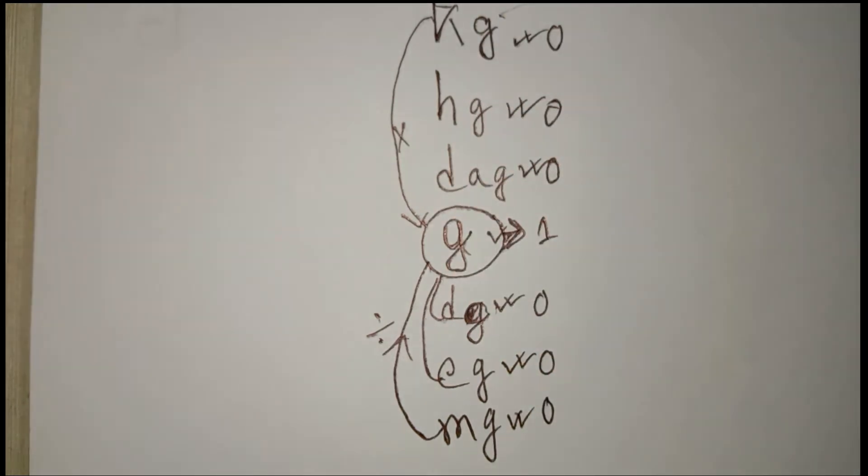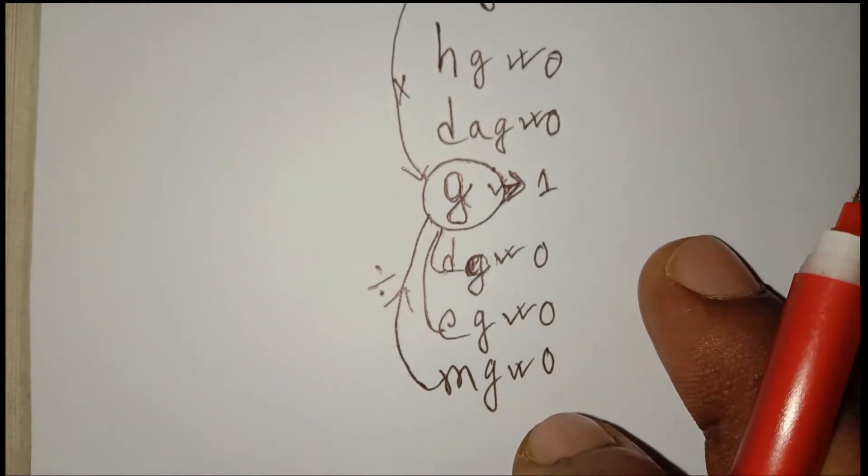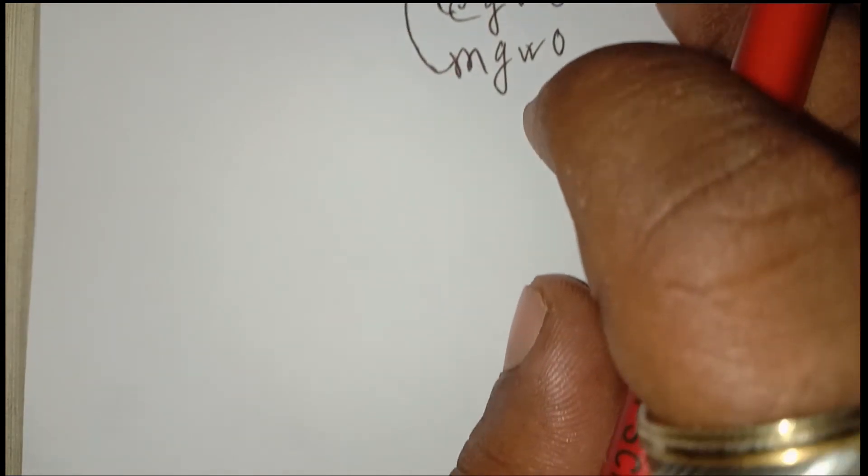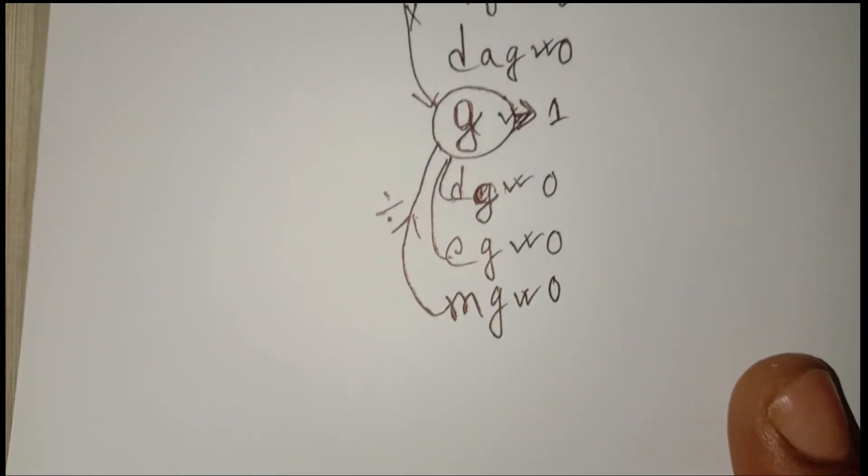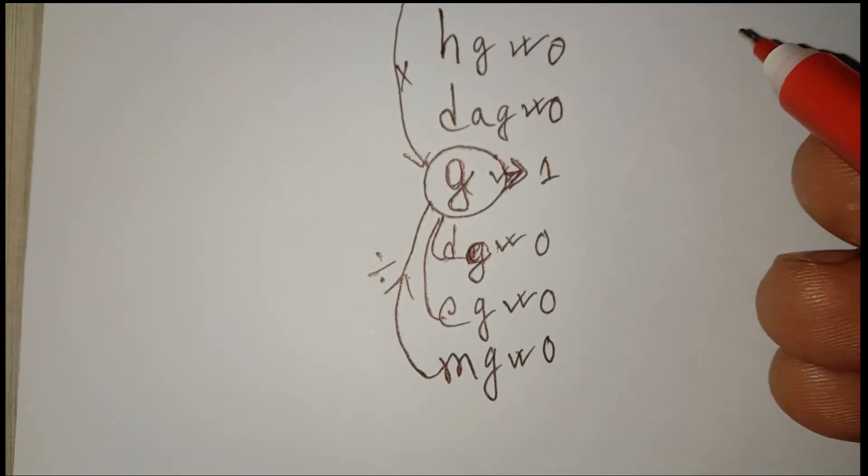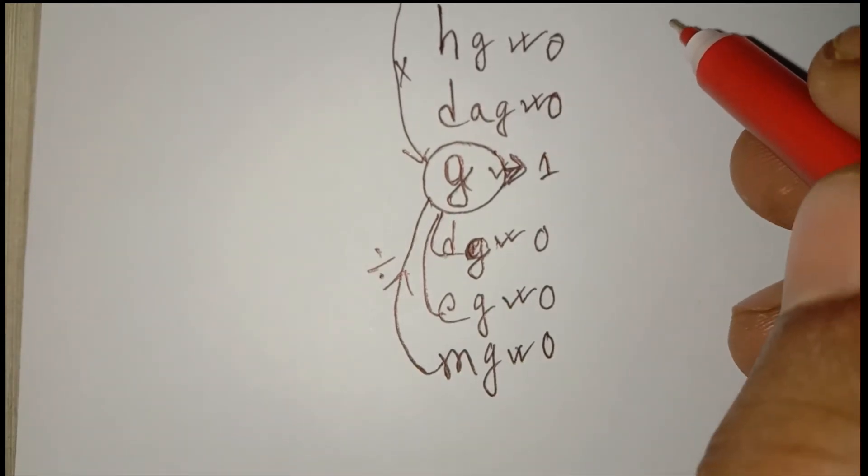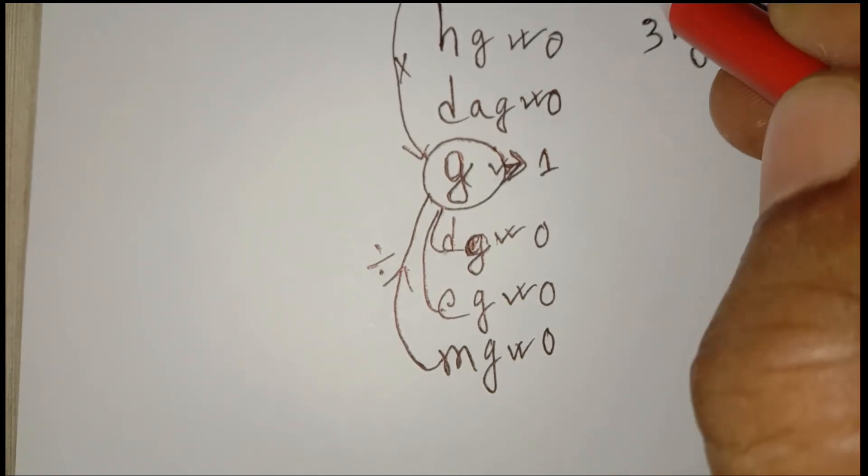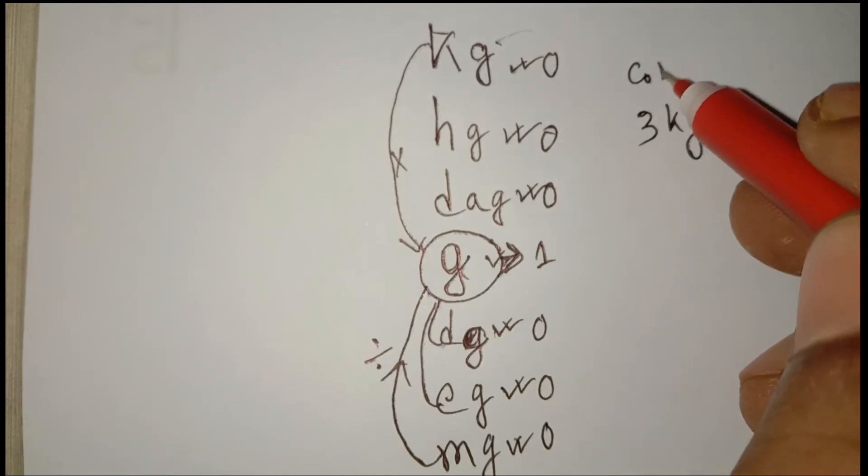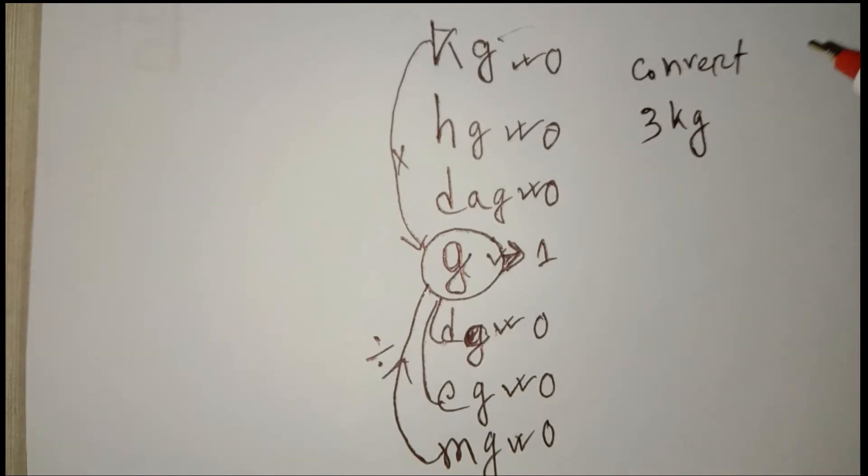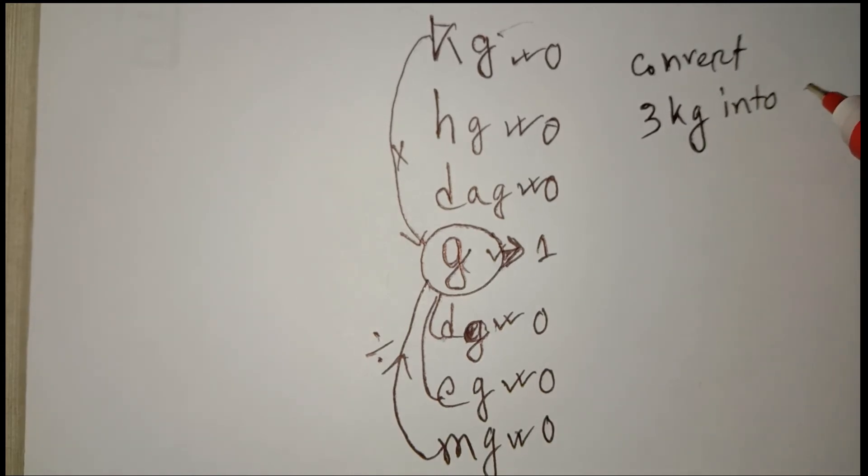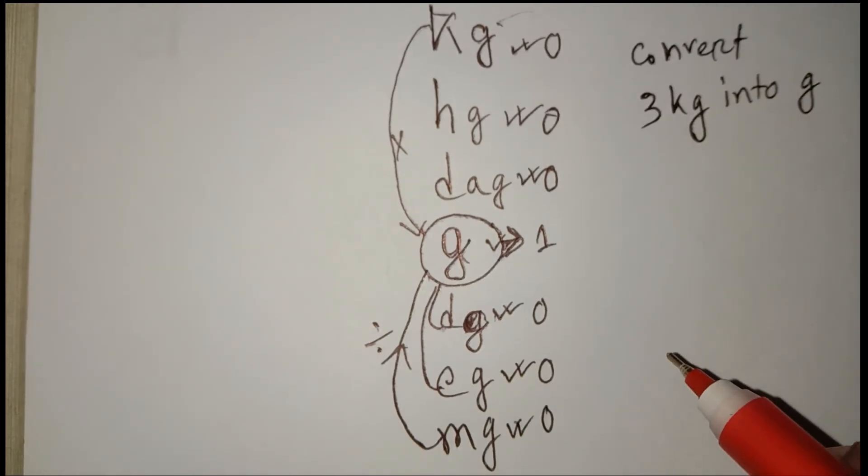Each can be divided into three types. Now let's see an equation. Suppose: convert 3 kilogram into gram.